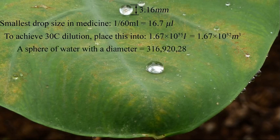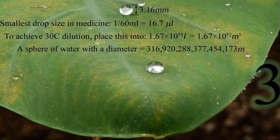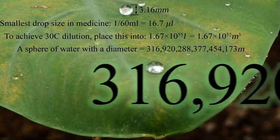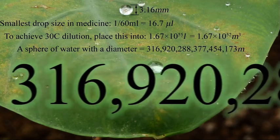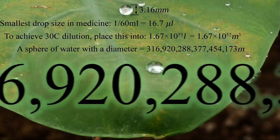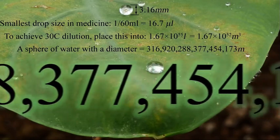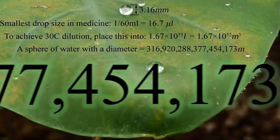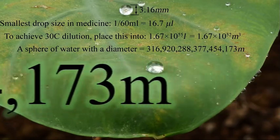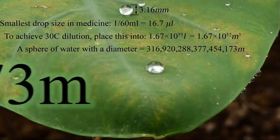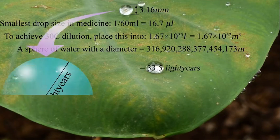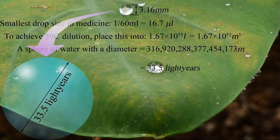Which, as a sphere, is 316 quadrillion, 920 trillion, 288 billion, 377 million, 454 thousand, 173 metres in diameter. Or, to put it another way, a sphere of water with a diameter of 33.5 light-years.